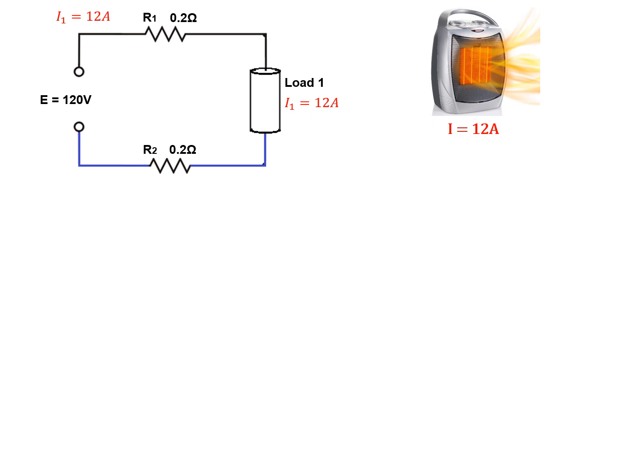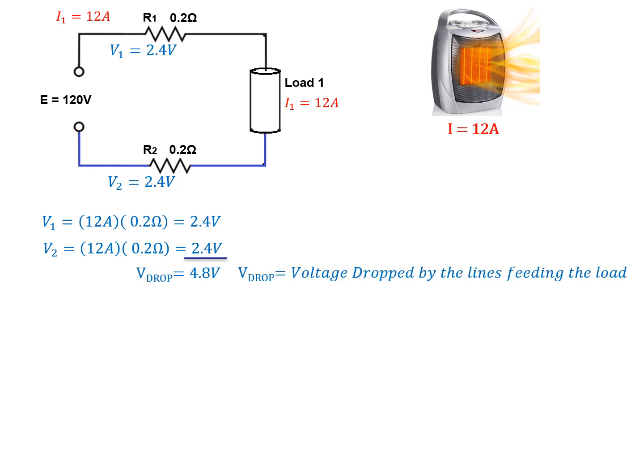Since our load is drawing 12 amps, and our feeder wires, R1 and R2, each have 0.2 ohms, we can calculate the voltage drop for those two lines, where each of them are going to have a 2.4 volt drop. We call this the voltage drop. This is the voltage that is dropped by the lines that are feeding the load. It's a series circuit, so we can now calculate the voltage to the load, where the voltage of the load is equal to our source subtract our voltage drop, which in this case is 120 take away 4.8 volts, for a total of 115.2 volts.